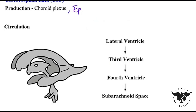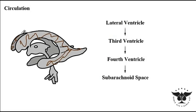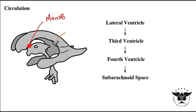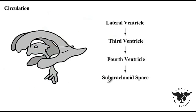Most of the cerebrospinal fluid is produced inside the lateral ventricles as well as the third ventricle. Via the foramen of Monroe, cerebrospinal fluid is transported from the lateral ventricles into the third ventricle. From there, cerebrospinal fluid flows from the third ventricle into the fourth ventricle via the cerebral aqueduct of Sylvius, which connects the third ventricle to the fourth ventricle.